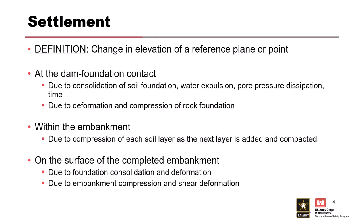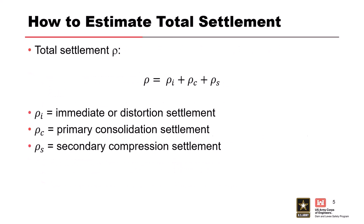Settlement is defined as a change in elevation of a reference plane or point, typically due to an increased load at the dam foundation contact — a critical portion of your dam. We'll get excess pore pressure dissipation over time, leading to settlement, and potentially cracking or piping at that elevation, so we want good filters in place. You also get compression within the embankment itself. Settlement has three parts: immediate or elastic settlement, primary consolidation settlement (typically for fine-grained materials), and secondary settlement compression.